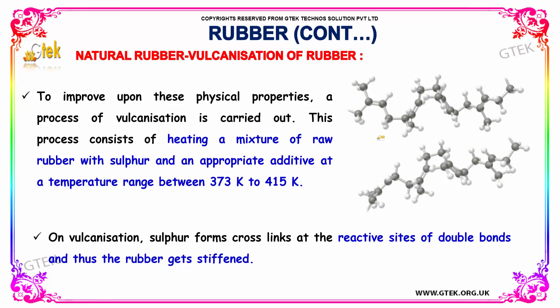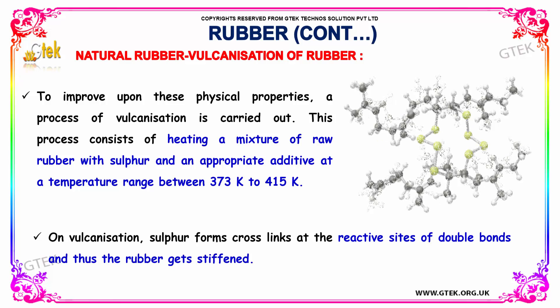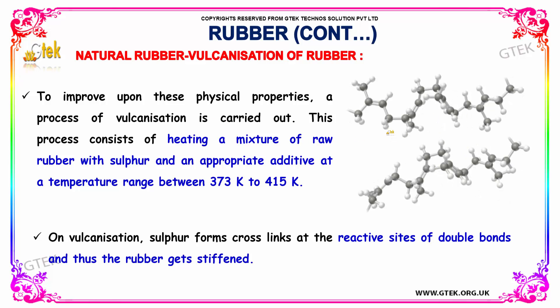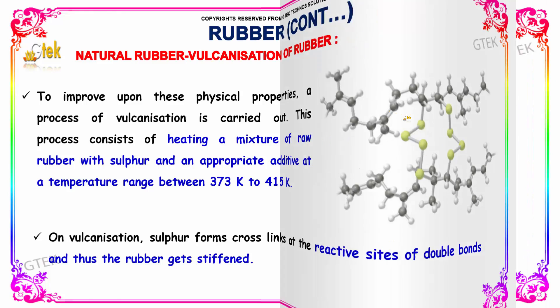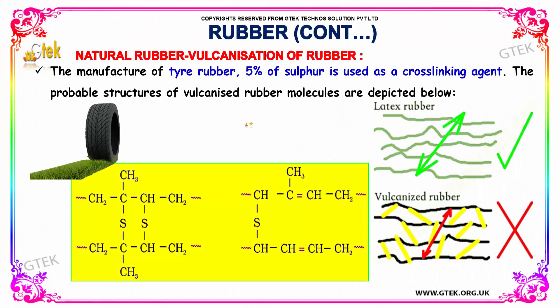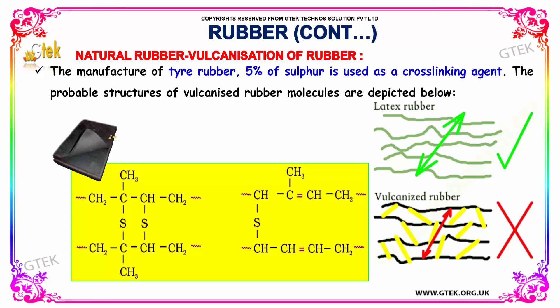The vulcanization process consists of heating a mixture of raw rubber with sulfur and an appropriate additive at a temperature range between 373 to 415 Kelvin. On vulcanization, sulfur forms cross-links at the reactive sites of double bonds, and thus the rubber gets stiffened. In the manufacture of tire rubber, 5% of sulfur is used as a cross-linking agent.